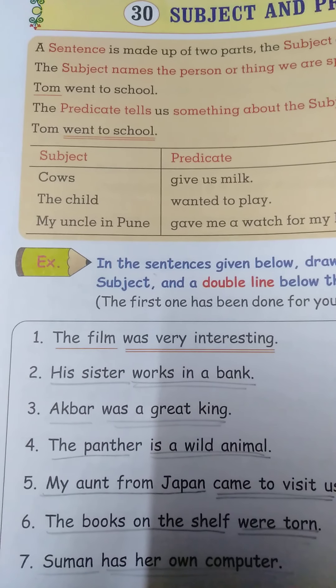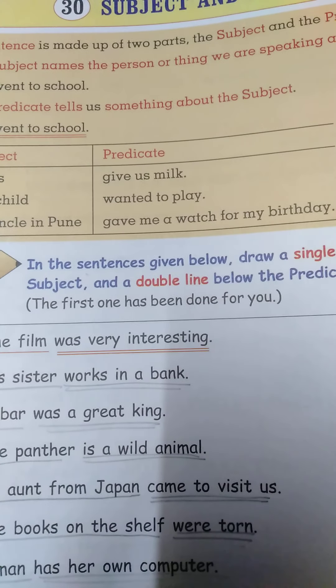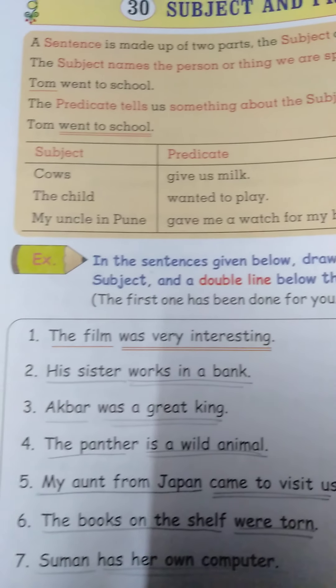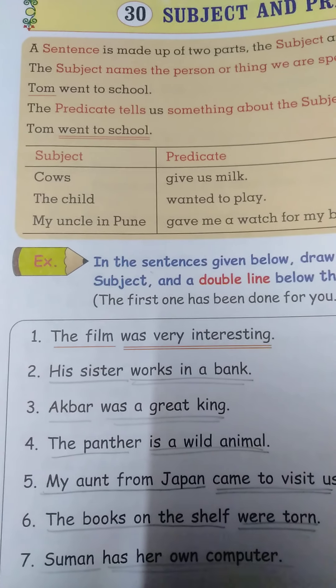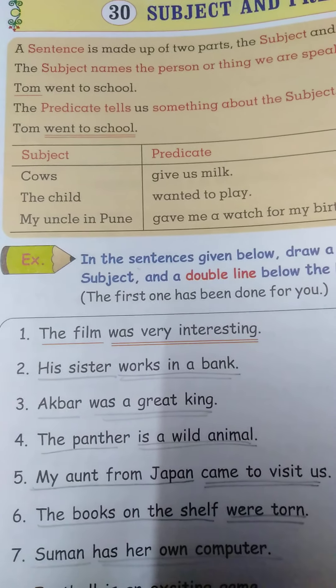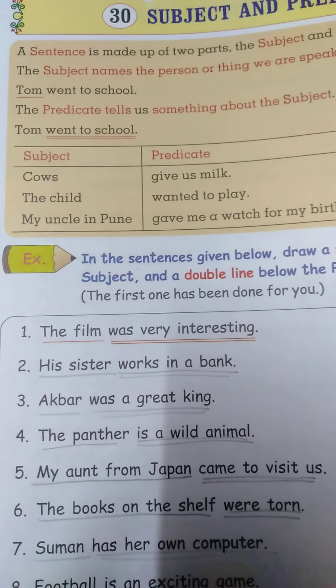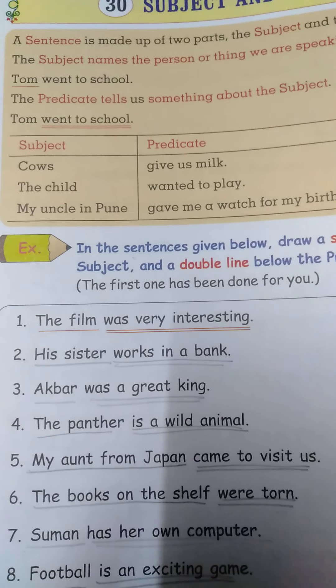Now, what is a predicate? The predicate tells us something about the subject. For example, 'Tom went to school.' The predicate tells us something about the subject — what is Tom doing? Tom went to school. So, 'went to school' is the predicate. Tom is the subject, and 'went to school' is the predicate.